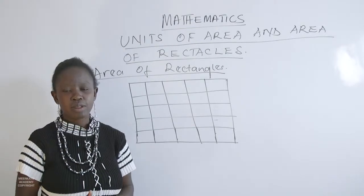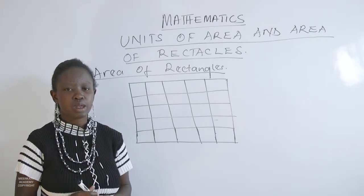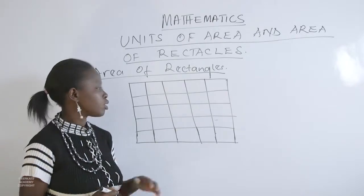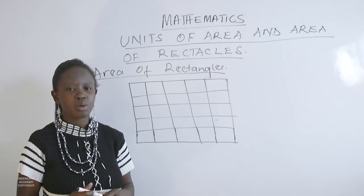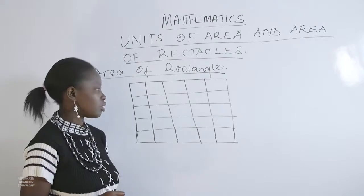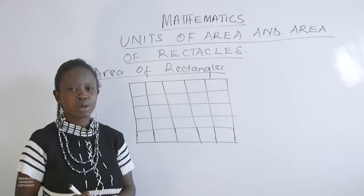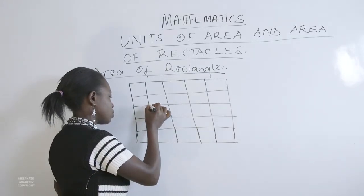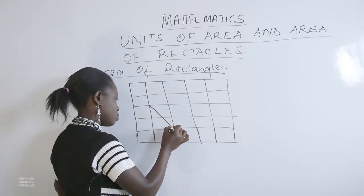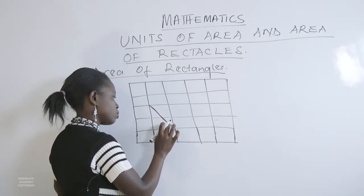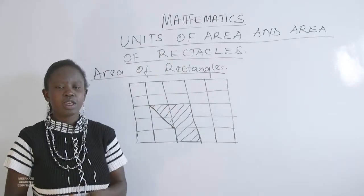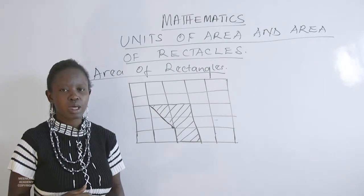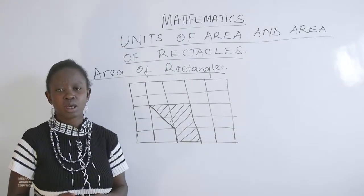Sometimes we are given square grids with a figure drawn on them and we are required to find the area simply by counting the square grids. Suppose we have a figure drawn on a square grid and are required to get the area. We draw the figure on the grid, and then calculate the area of that given figure.